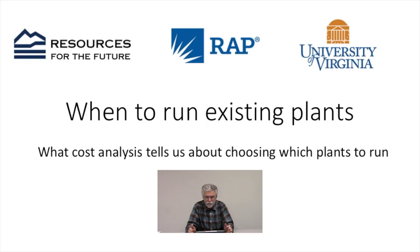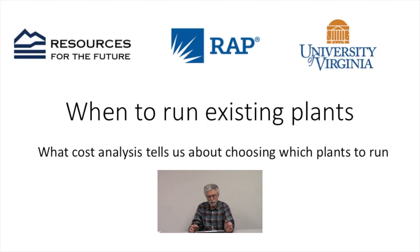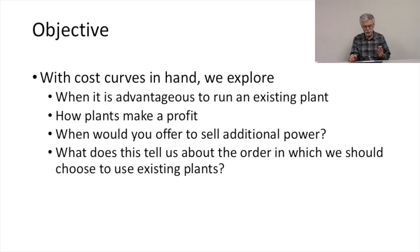We're going to use what we know about costs to think about when we should run the different plants in our portfolio. We have four plants: Big Fossil, Gas Peaker, Solar, and Demand Reduction. These are our four different ways of managing the energy supply we need to provide. We're going to talk about what our cost analysis so far tells us about choosing which plants to run.